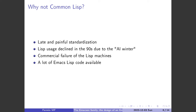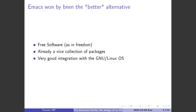Unix won the operating system war, and Emacs Lisp was available on GNU Linux — the most successful Unix implementation. Emacs won by being the better alternative and by being free — free as in freedom, but also in price, which the Lisp machines weren't. It had a nice collection of packages, was easy to extend because of the nature of Lisp, and had very good integration with GNU Linux.